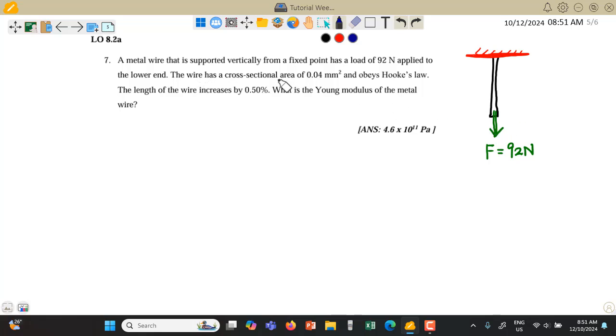The wire has a cross-sectional area of 0.04 mm². This mm² is not the right unit. We have to change it to m². So I write it down. We are given the cross-sectional area of the wire 0.04 mm². I change it to m².